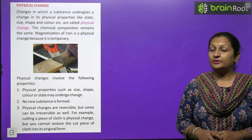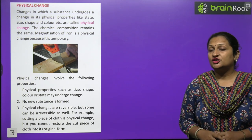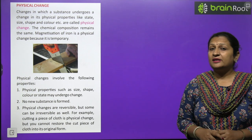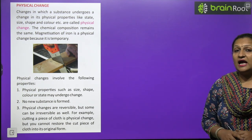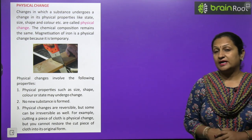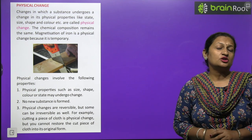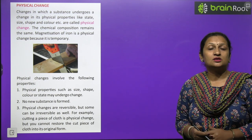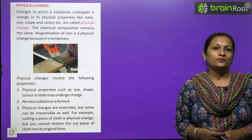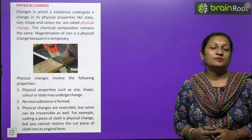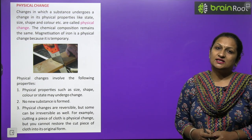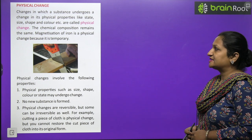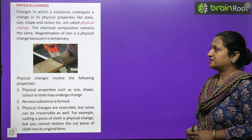For example, if you take ice and leave it at room temperature, it changes into water. If you heat water, it becomes steam. If you condense the steam, it forms water droplets, and if you freeze those water droplets, they form ice again. No new substance is formed, and there is no change in composition - the change is temporary and reversible. Changes in state, color, or size are called physical changes.